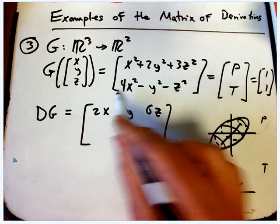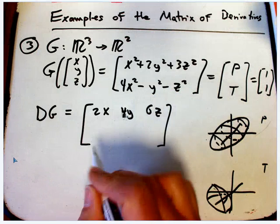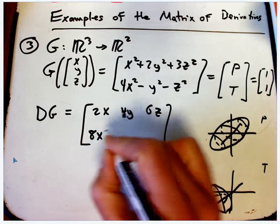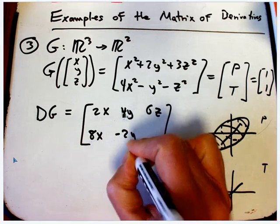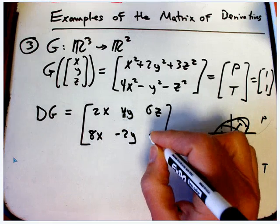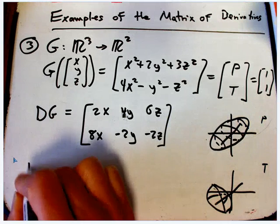So now we're going to take the derivative of the t function, the second output of g, with respect to x. So 8x, -2y, and -2z. Okay, so for example, dg...